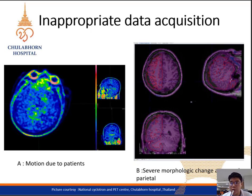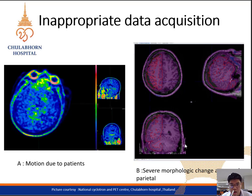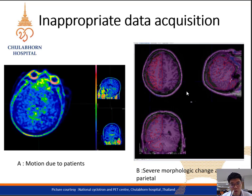The last part: I'd like to briefly show what inappropriate data may look like. In image A, the blurring artifact from head rotation during scanning — you may see the ghosting image. In image B, the wrong VOI applied to severe atrophy in the parietal region. These variations of false analysis can impact and lower the accuracy of the SUVR.